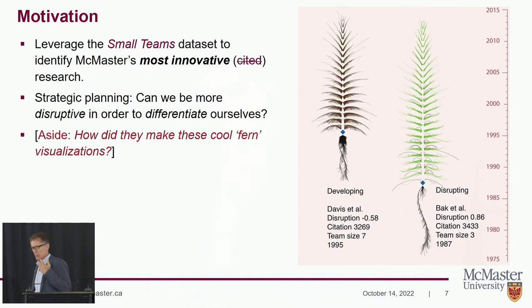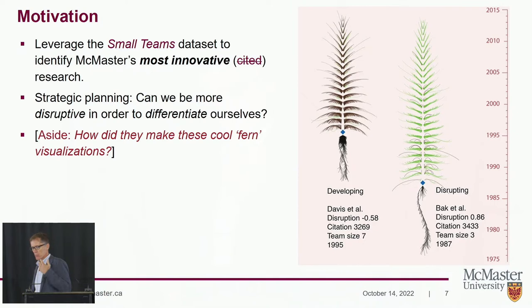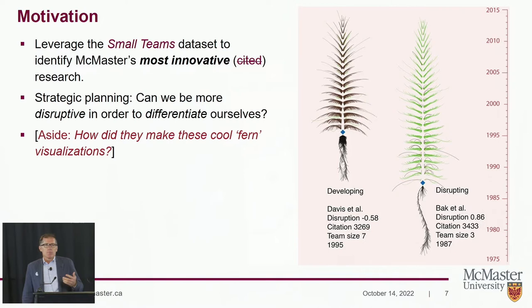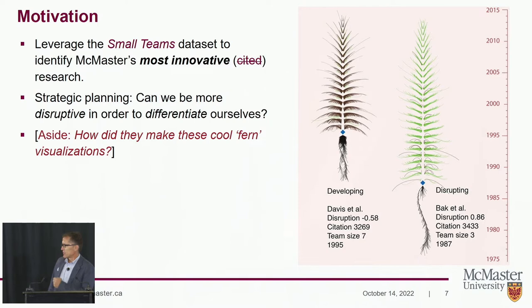Wouldn't it be nice to do that at McMaster? My motivation is to leverage this small teams dataset to identify McMaster's most innovative — not its most cited — research. Theoretically, we could use this in strategic planning: how can McMaster differentiate itself from other universities and do research that, over the long term, will have more of an impact? And I want to find out how they make these ferns.